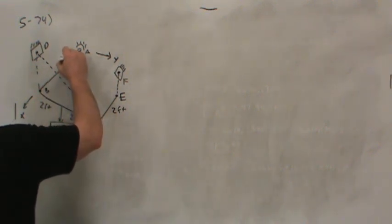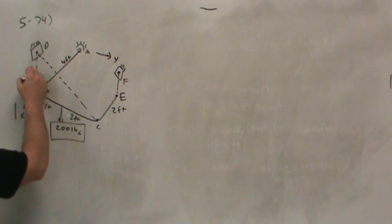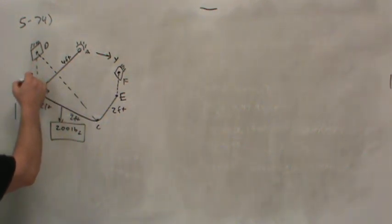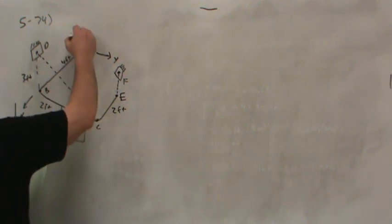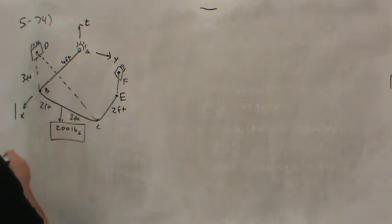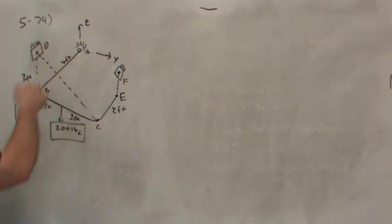And then A to B is also four feet long. The height to point D from B is three foot, and I think that's all of the relevant geometry we need. Well, it would be nice to have a Z axis. So right-hand coordinate system, X into Y is Z.